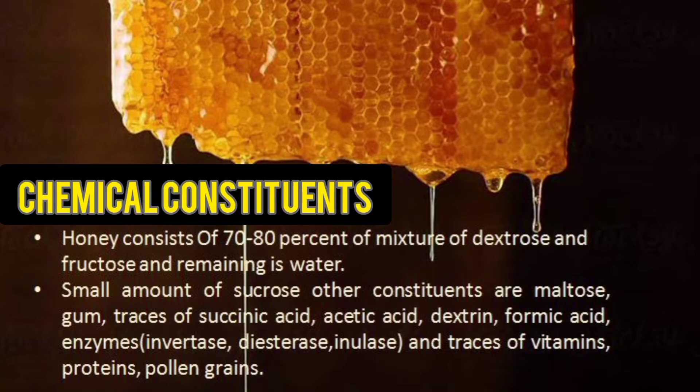The chemical constituents of honey: 70 to 80% dextrose and fructose, plus water. A little amount of sucrose and maltose is also present. Trace amounts of succinic acid, acetic acid, dextrin, formic acid, and some enzymes are also present — invertase, diastase, and inulase. It also contains vitamins, proteins, and pollen grains.